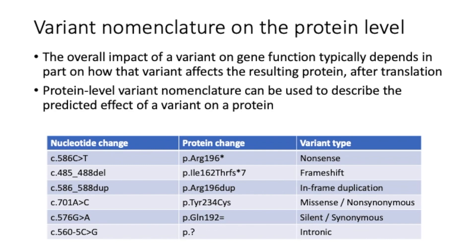In the next example, three nucleotides within TP53 are duplicated, from nucleotide 586 to 588. As the number of nucleotides duplicated is a multiple of three, this duplication does not disrupt the reading frame during translation. This duplication of three nucleotides results in the duplication of one amino acid residue on the protein level — an arginine at residue number 196. The fourth example shows a substitution at the nucleotide level of an A to a C nucleotide at position C dot 701. On the protein level, this changes the amino acid that the three-nucleotide codon encodes for at amino acid residue 234 from a tyrosine to a cysteine. This sequence change leads to the substitution of a single amino acid in the protein and is called a missense or non-synonymous variant.